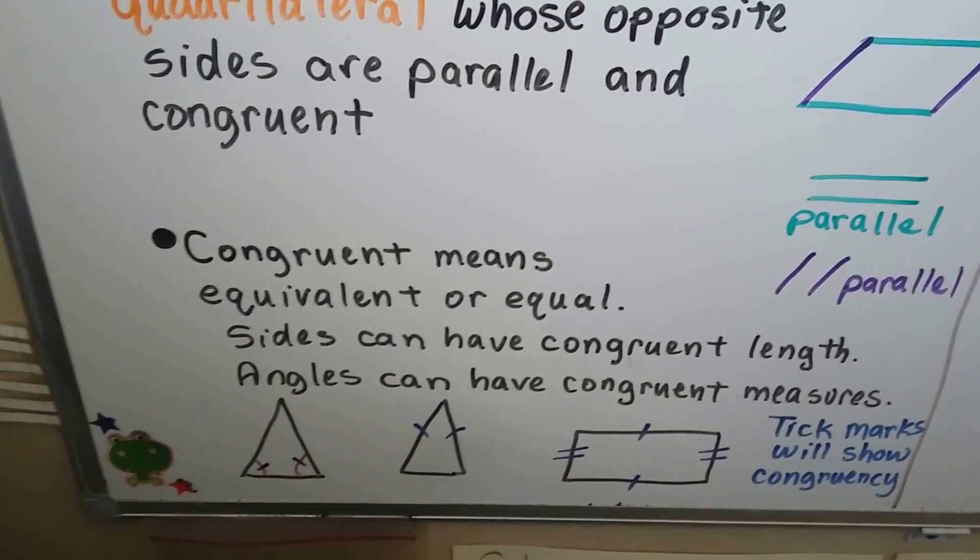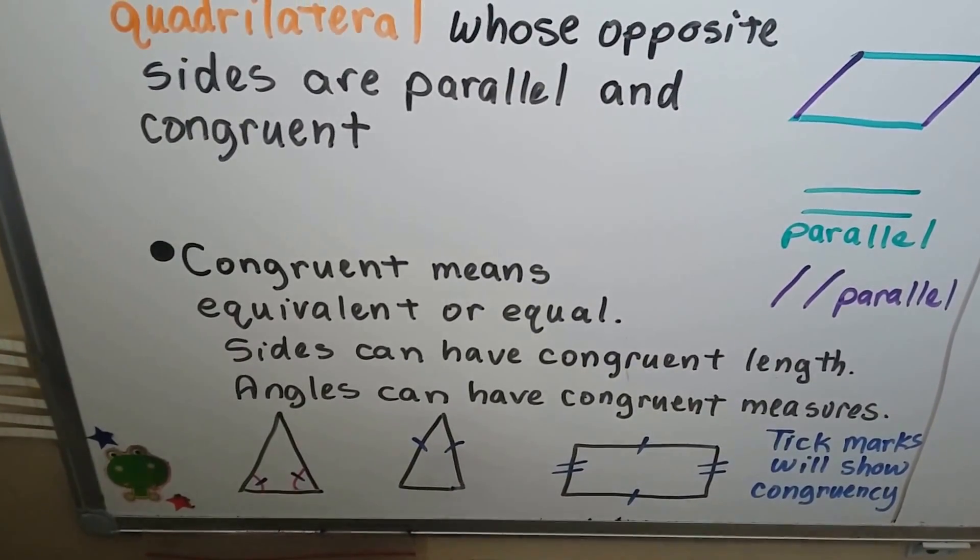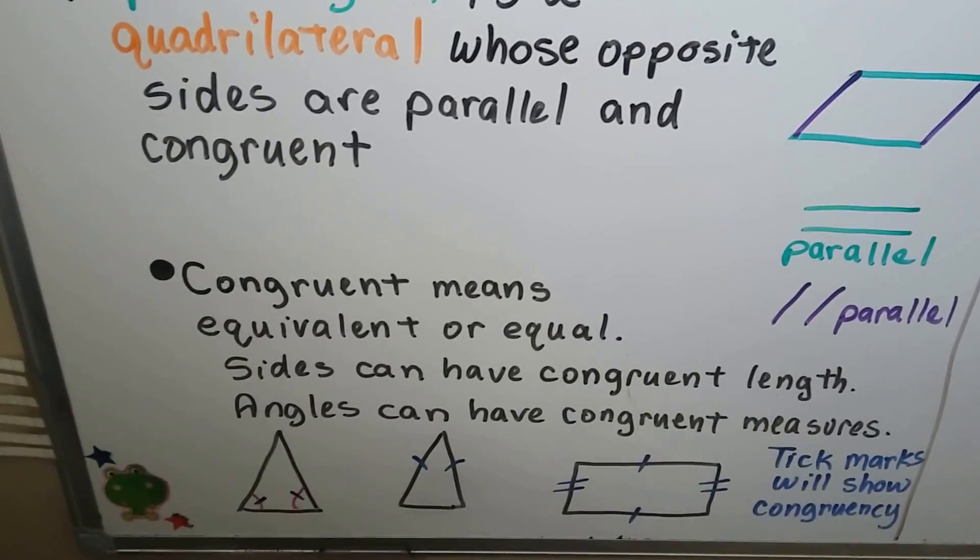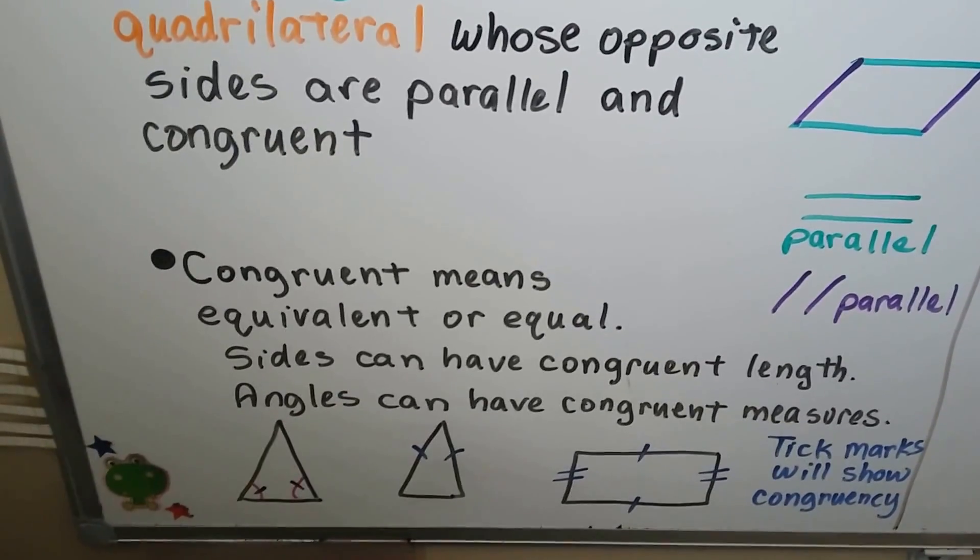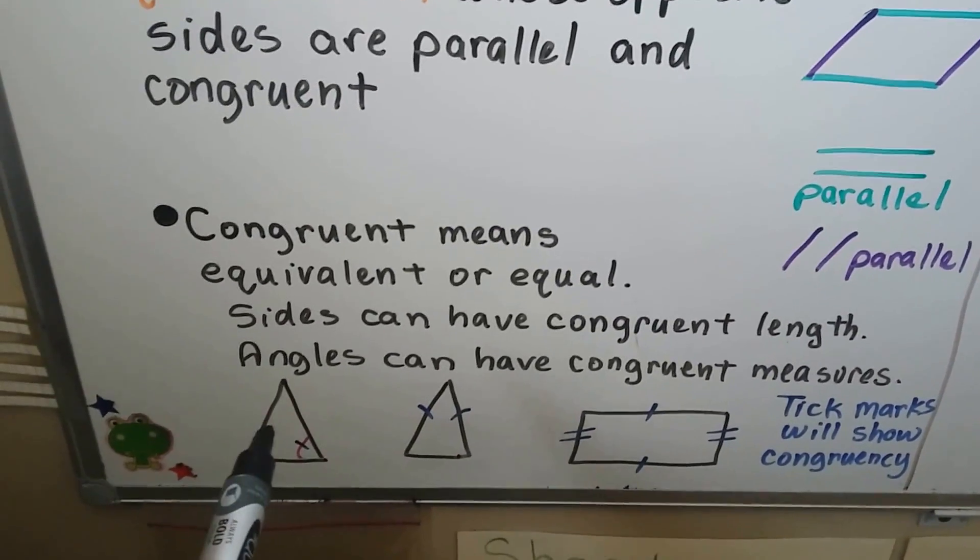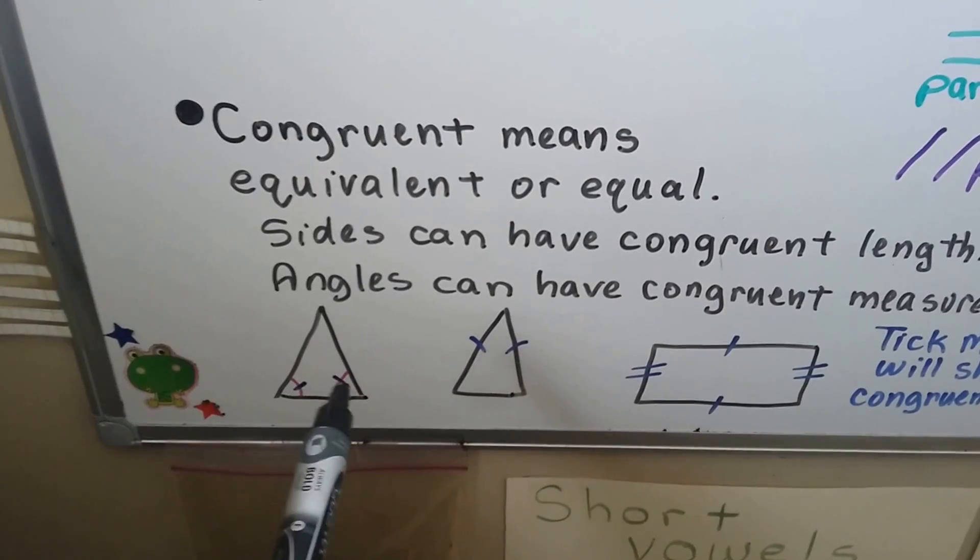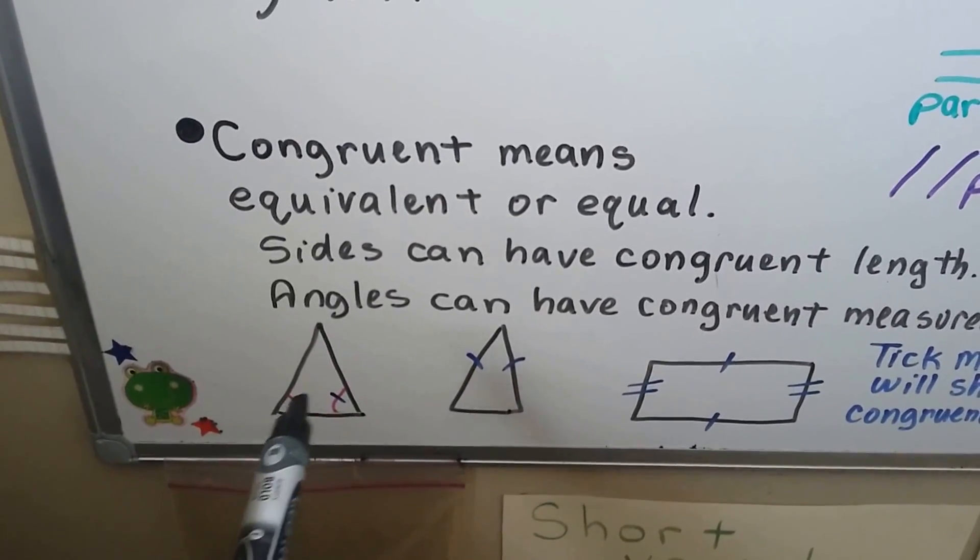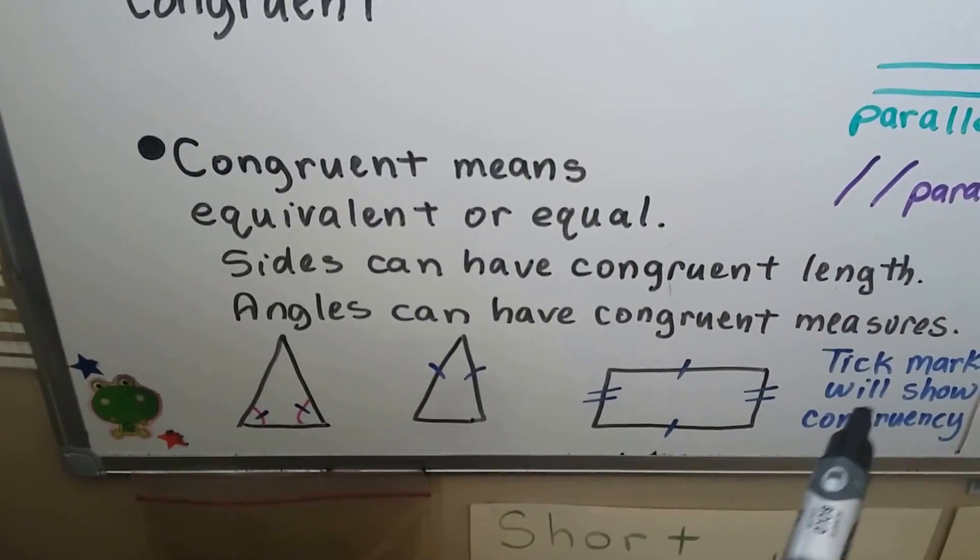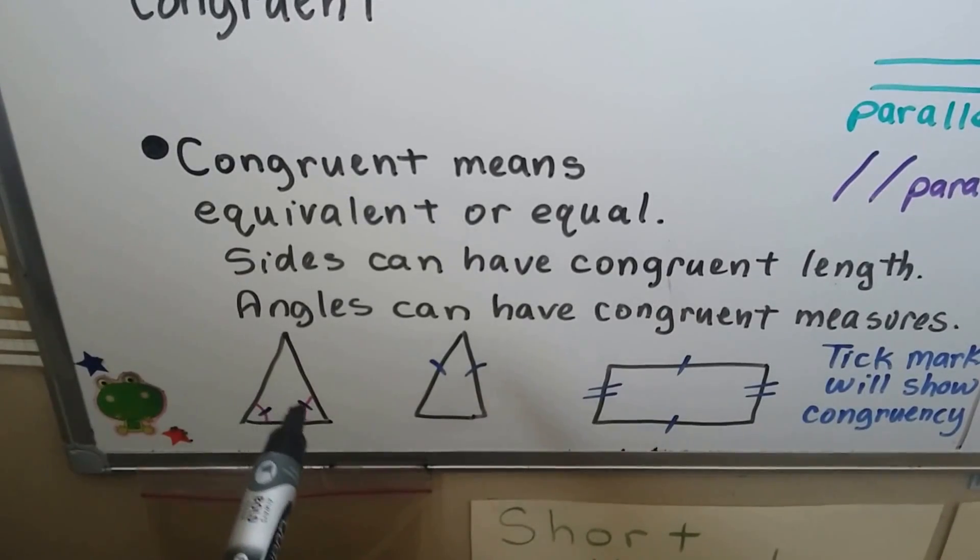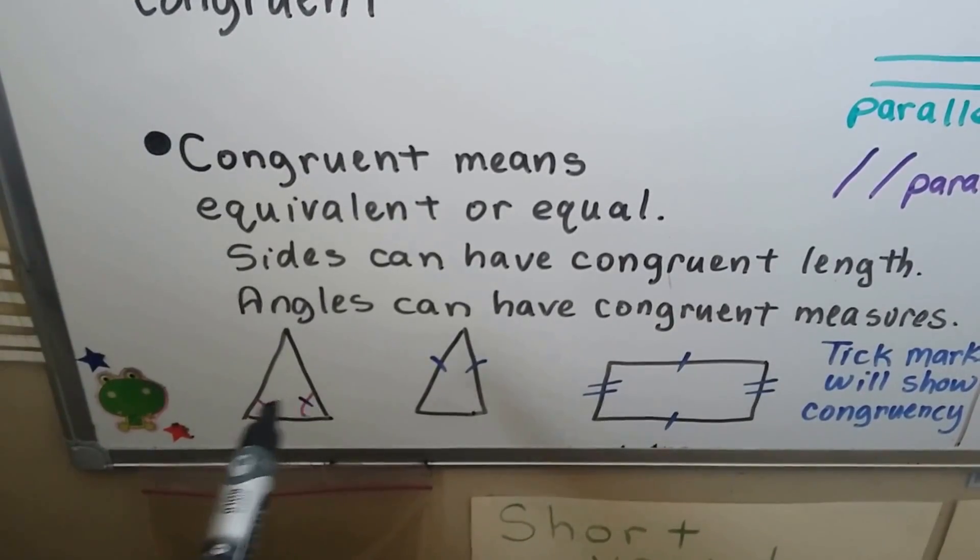Congruent means equivalent or equal. Sides can have congruent length. Angles can have congruent measure. And one polygon can be congruent to another polygon. When you see the little curve mark inside the angle with a little line through it, those are called tick marks, and they show congruency. That means this interior angle is congruent to that interior angle. That means they have the same measure.